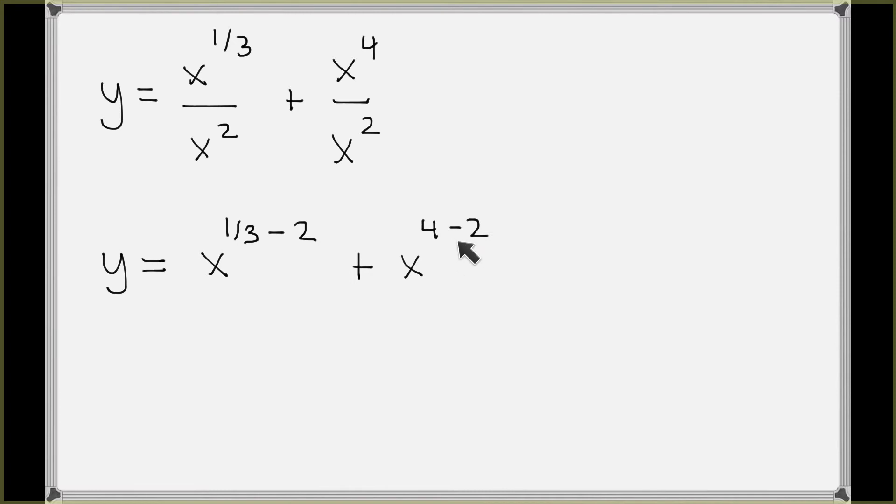And so now I'm going to go ahead and carry out those subtractions. One-third minus two—two is six-thirds—and so one minus six would give you negative five-thirds. And of course four minus two is two.